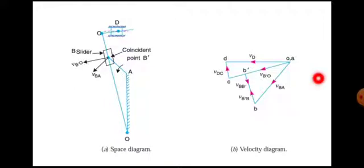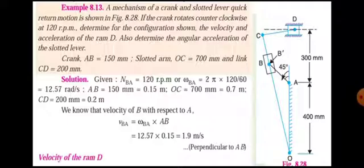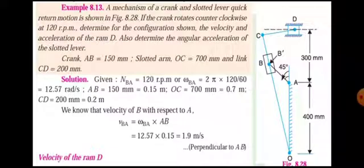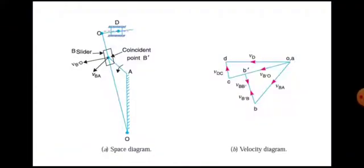Now we are going to get the velocity diagram. Mark the fixed point O_A. Next, AB — we know the velocity of AB from the velocity diagram calculation. The value is 1.9 meters per second. So the length representing 1.9 meters per second is drawn. This gives us the value at point B.